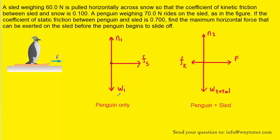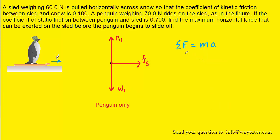Now in both free body diagrams, the objects are accelerating, so we can apply Newton's second law to both. For the penguin-only diagram, the sum of forces equals mass times acceleration. The penguin is accelerating only in the x direction, and in the x direction there is only one force acting — the static frictional force — so we can plug that in for the net force.